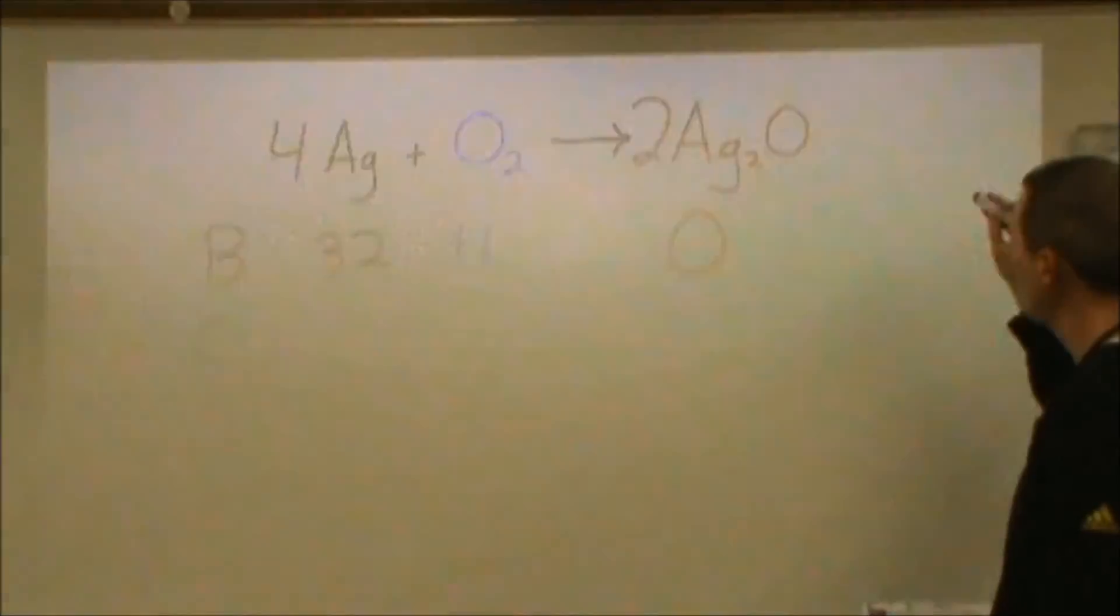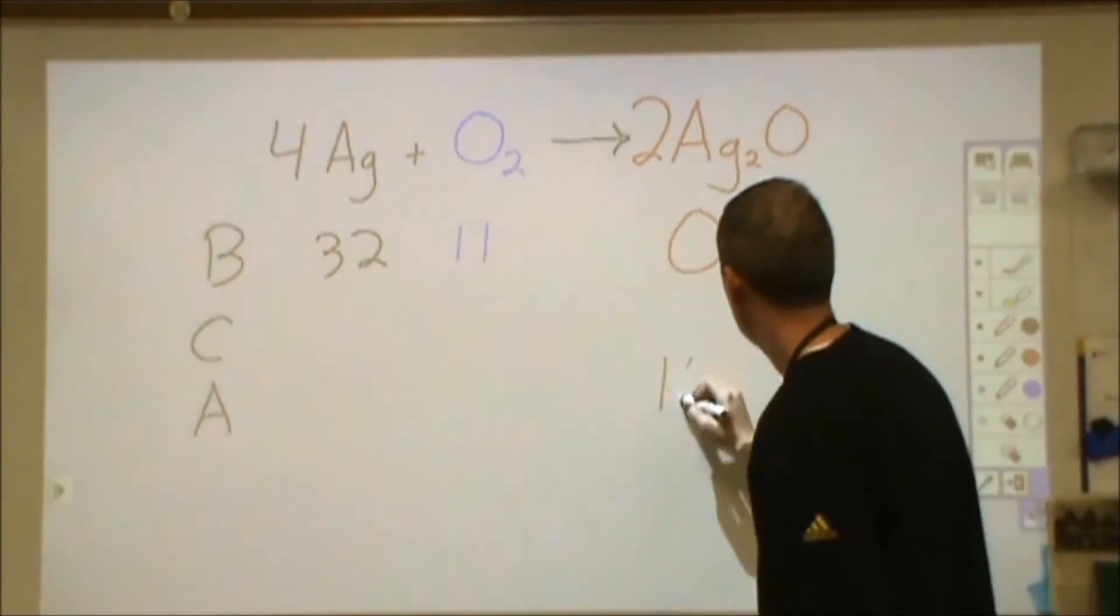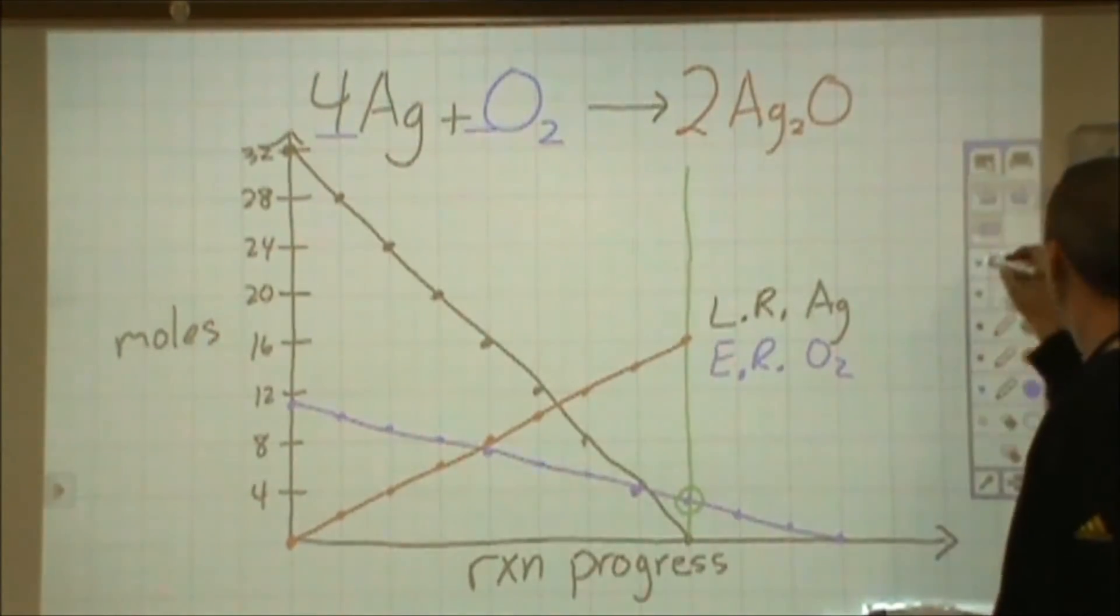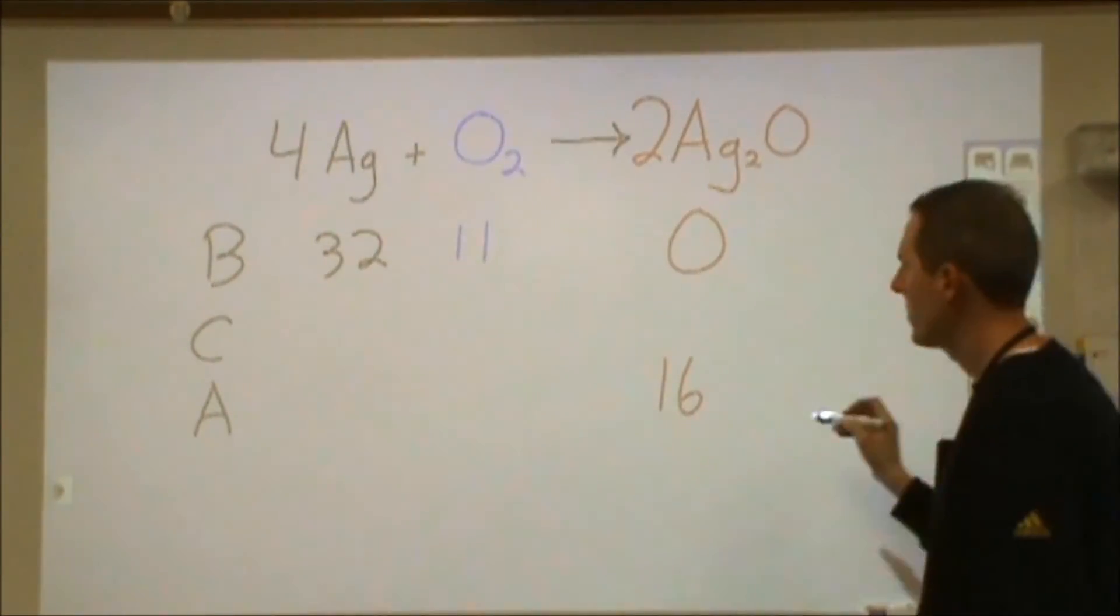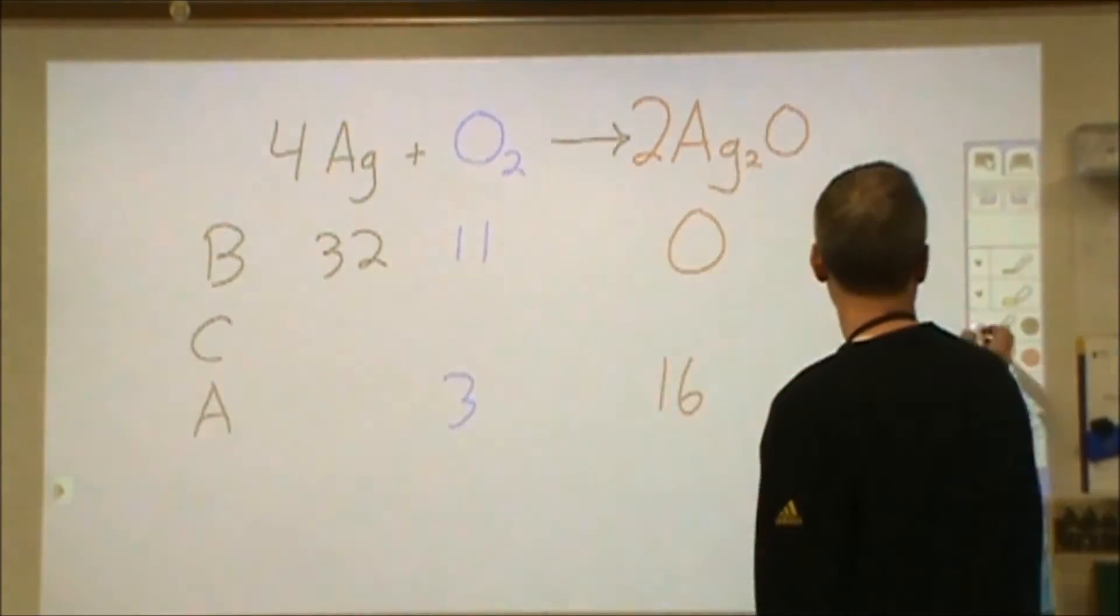So let's go ahead and plug some of those numbers. Sixteen moles is what we end up with of silver oxide. We finished with three moles and zero for our other two amounts. So we finished with three and zero.